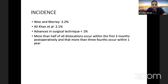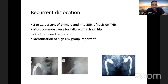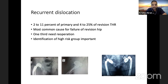Several factors can be responsible for dislocated total hip arthroplasty. 2–11% of primary and 4–25% of revision THR are associated with recurrent dislocation. The most common cause for failure of revision hip is again dislocation. If there is instability once which leads to a revision, it is more likely to recur at re-revision. One-third of patients require re-operation. Not all patients with hip dislocation require revision surgery unless there is gross component malposition or failure to restore the vertical or horizontal offset. The first treatment is closed reduction, and identification of the high-risk group is exceptionally important.